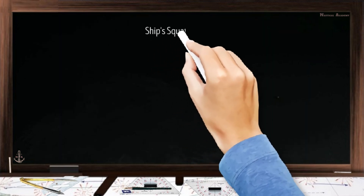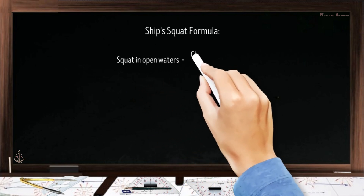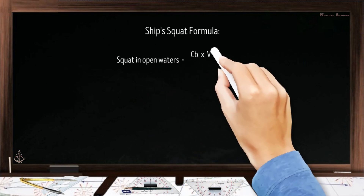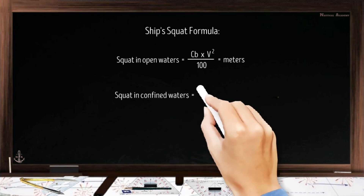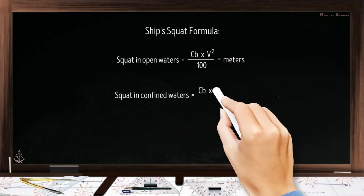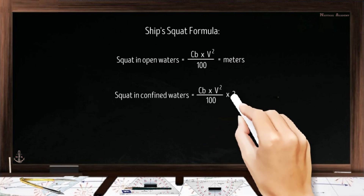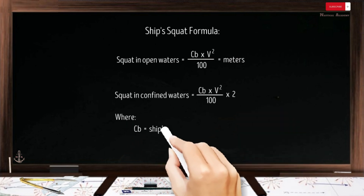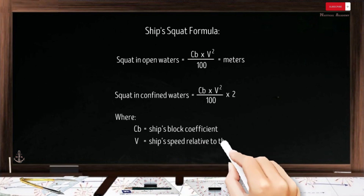The formula to calculate ship squat is: squat in open waters equals the block coefficient (CB) times the ship's speed relative to the water squared (V²), divided by 100 — the answer is in meters. For confined waters, the formula is the same but multiplied by 2. CB is the ship's block coefficient and V is the ship's speed relative to the water.